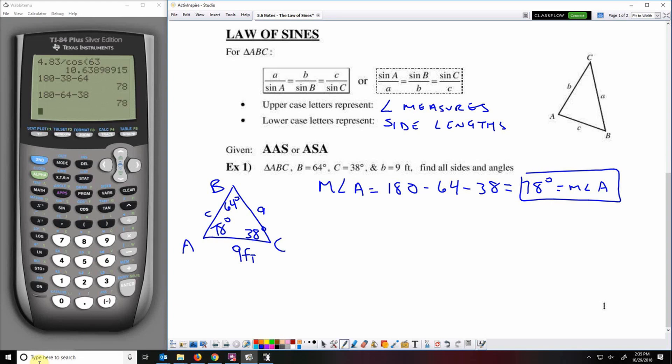So now I need the length of side A and side C. So we'll do side A first. So A over the sine of the opposite angle equals any other side over the sine of its opposite angle. So we'll use 9 over sine 64. So to get A by itself, all I have to do is multiply both sides by sine 78. So I'm going to multiply this up to here. So it's 9 times sine 78 divided by sine 64. 9.79.